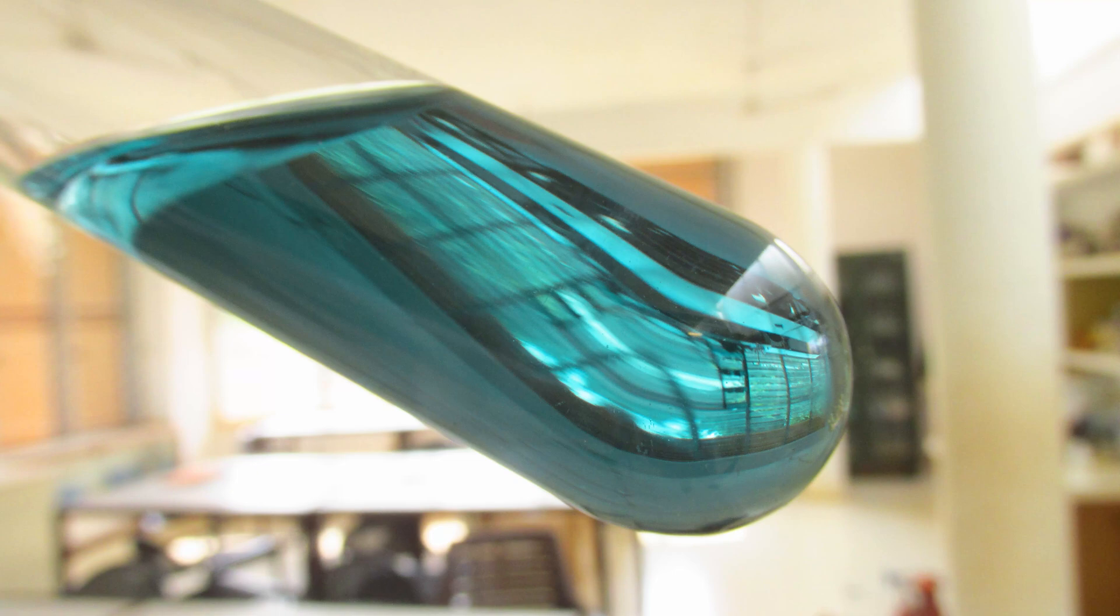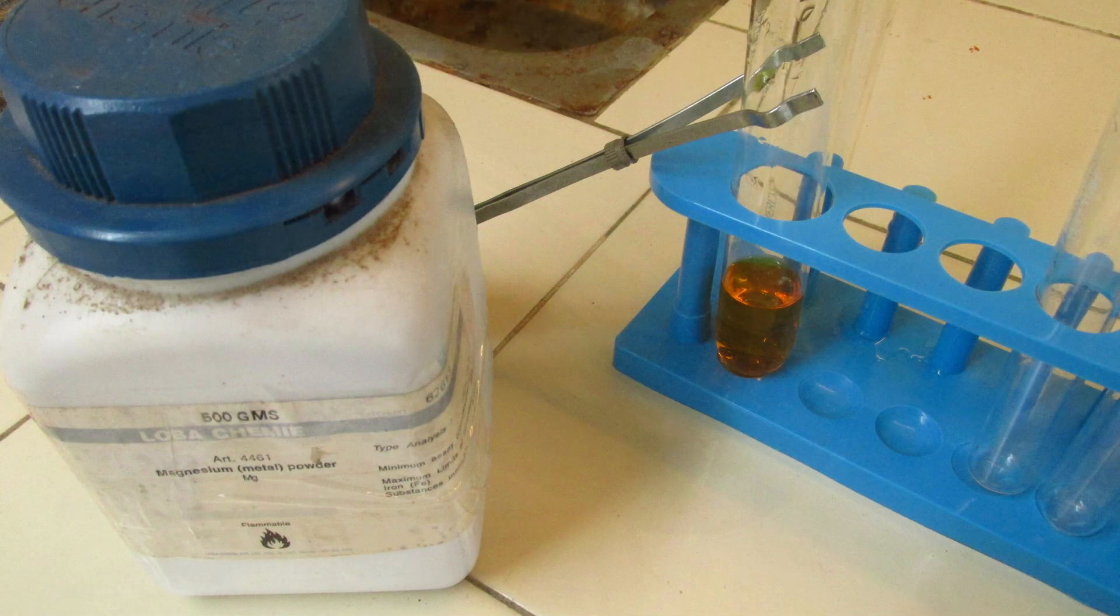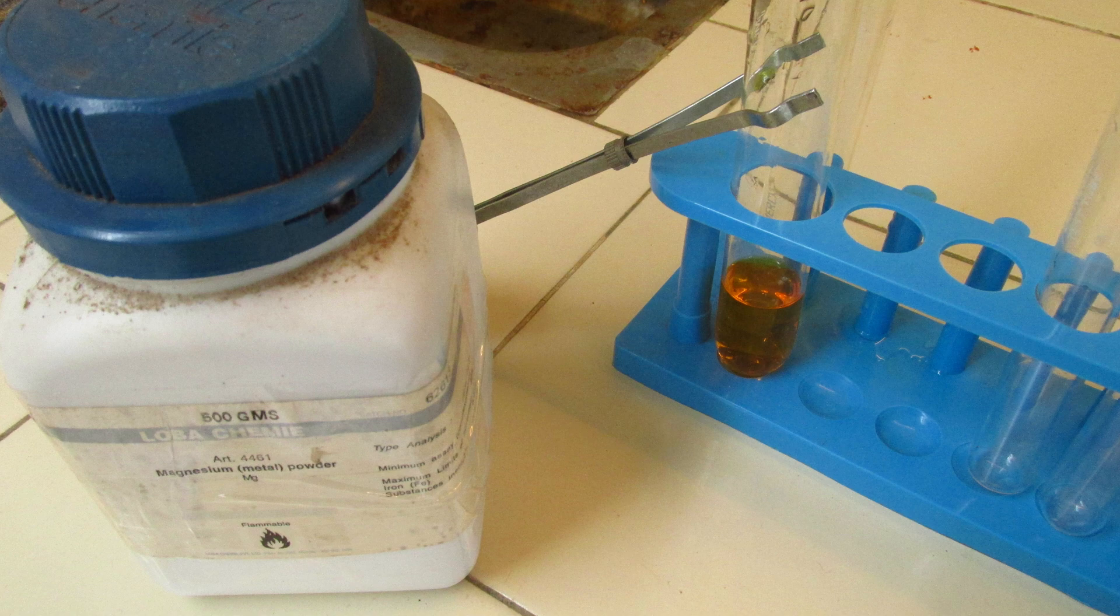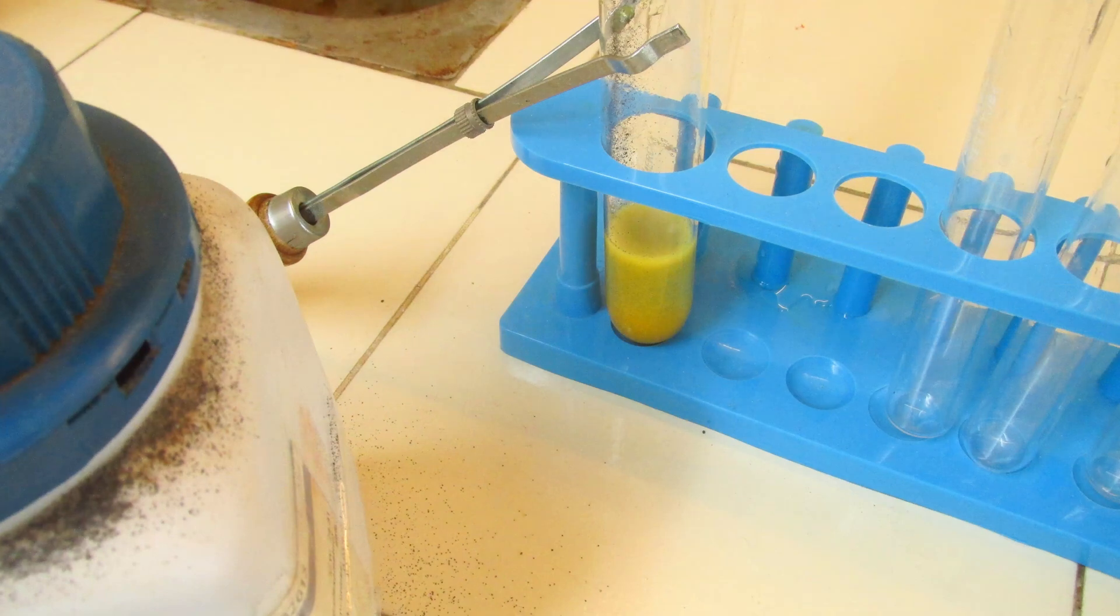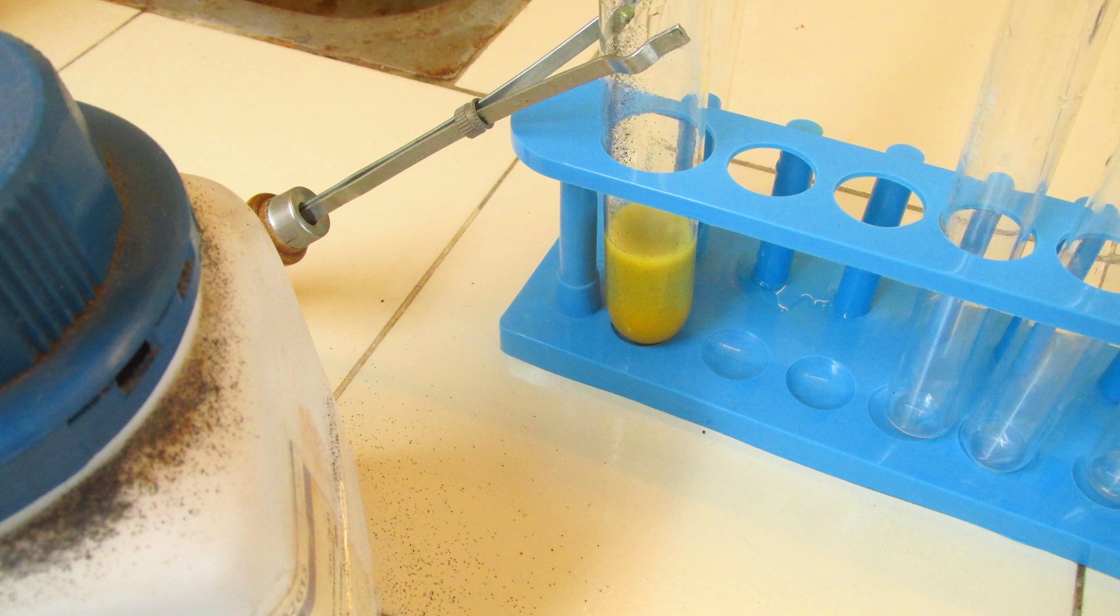Okay, let's play with some other reducing agents. Here I'm trying to add magnesium powder to my acidified potassium dichromate. Here you see what happened. It bubbles. It bubbles because obviously it reacts with sulfuric acid, which is there in my potassium dichromate 6 mixture.